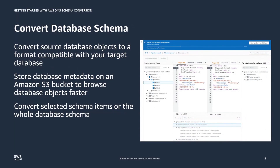After connecting to your source and target databases, you can convert source database objects to a format compatible with your target database. DMS Schema Conversion displays your source schema on the left panel in a tree view and the target on the right. Each node is lazy loaded — when you choose a node, schema information is requested from the source database at that time. You can also load metadata so DMS Schema Conversion reads and stores database metadata in an Amazon S3 bucket. You can convert the whole schema or select any individual schema item to convert.